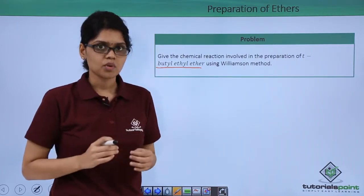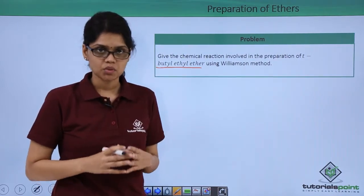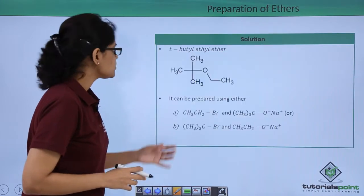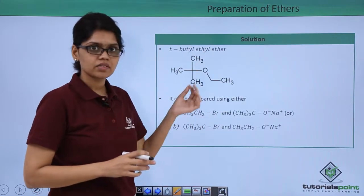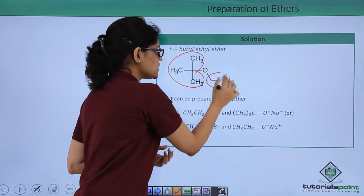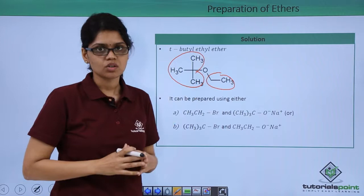In order to solve this problem, the first thing that we need to do is to draw the structure of the ether. The structure of tert-butyl ethyl ether is given here. You can see that this is the tert-butyl group and this is the ethyl group and this is the structure of the ether.